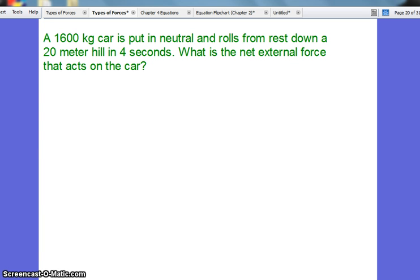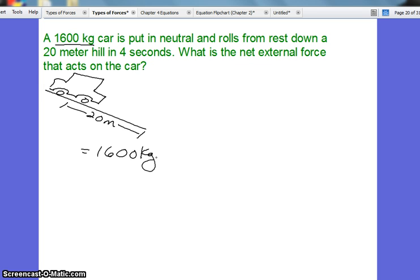What is the net external force that acts on the car? So first we'll draw our diagram. We have our car on a hill and it rolls down 20 meters from rest. And so we look for our givens next. We have a 1,600 kilogram car. Kilograms gives away that it's a mass.